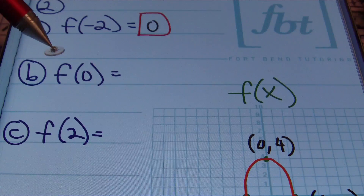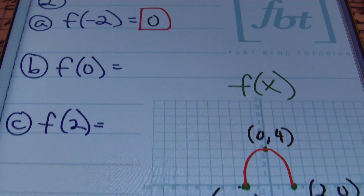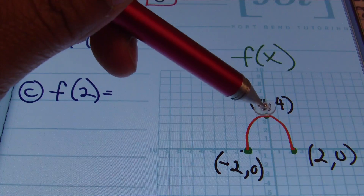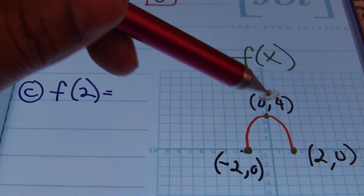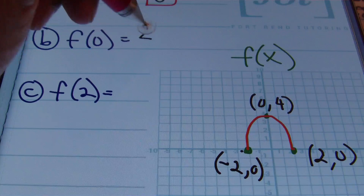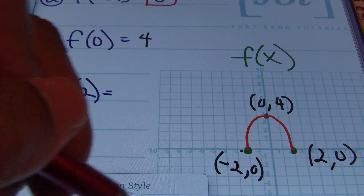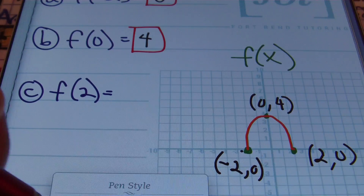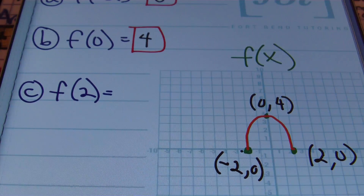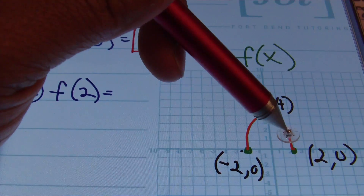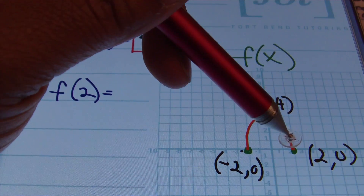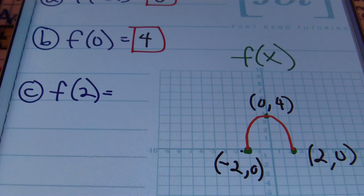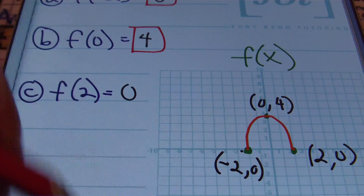In part b, they want to know what f of 0 is. Where x is 0 on the graph, we give them the y value — y is equivalent to 4 when x equals 0. So the answer is 4, corresponding to the ordered pair 0, 4. Then in part C, they want f of 2. We have a point at 2, 0 on the graph, so following the x-axis to 2, our y value equals 0. That's the answer for part 2C.